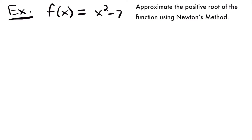Welcome back. Let's start with this example. We want to approximate the positive root of the function f of x equals x squared minus 7 using Newton's method. Before we start, let's write down what Newton's method is. Newton's method allows us to approximate the x-intercepts of a function, which are called the roots or zeros of the function.